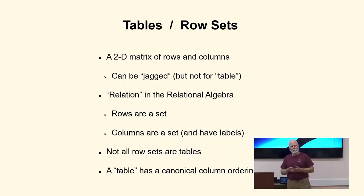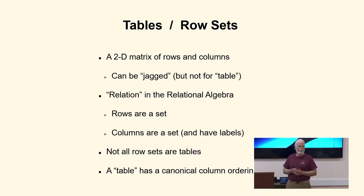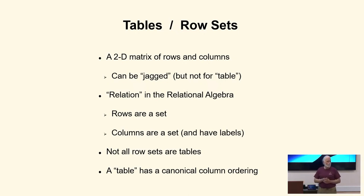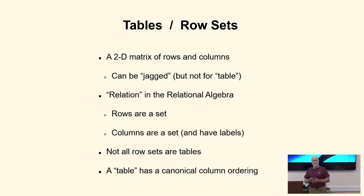The basics of this whole thing — I'll be a little fast and loose with terminology. Think of what we're dealing with as 2D matrices of rows and columns. In our case, we're going to allow what I'm calling jagged rows, which don't exist in SQL. They're also called a relation in the relational algebra. Rows themselves form a set, columns over the rows also form a set, and the columns have labels.